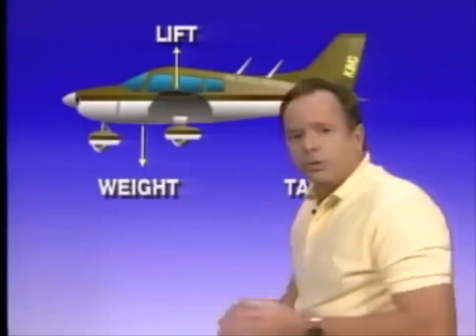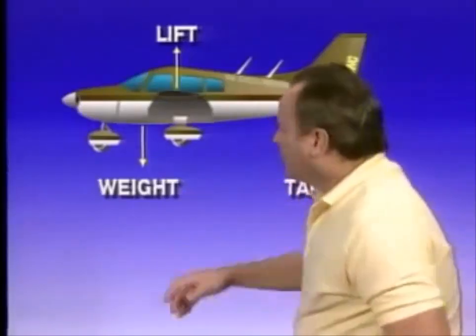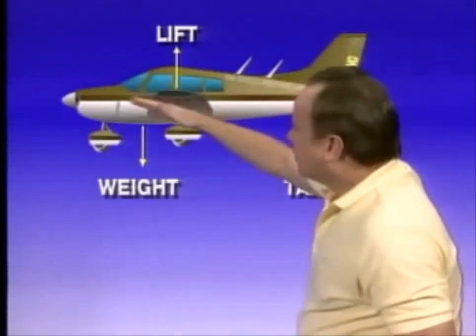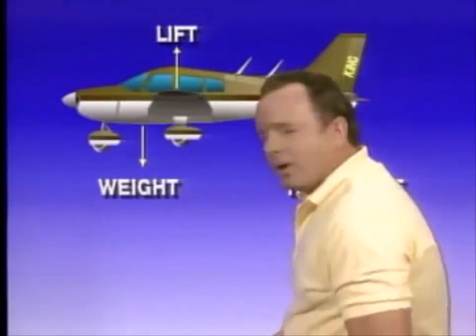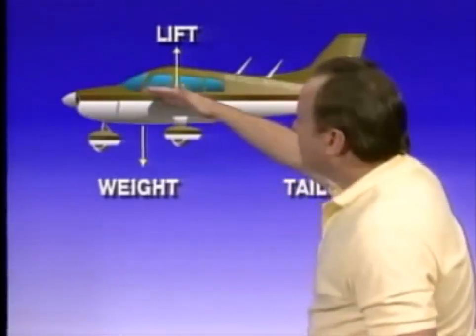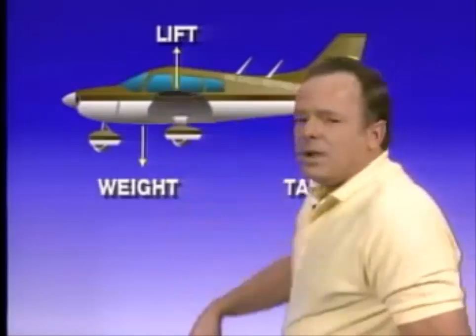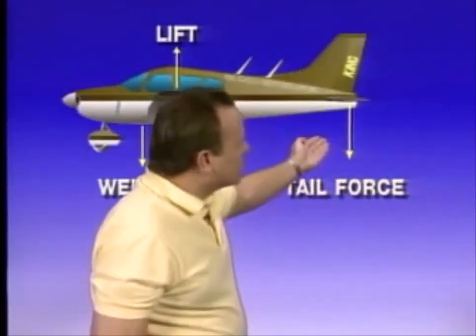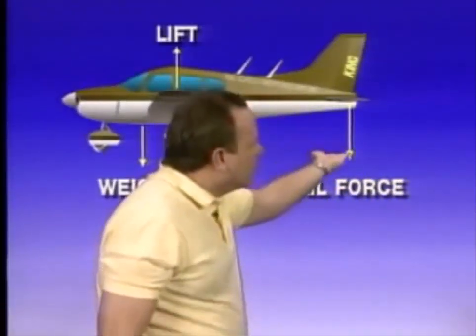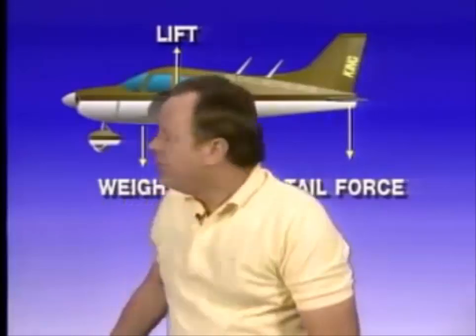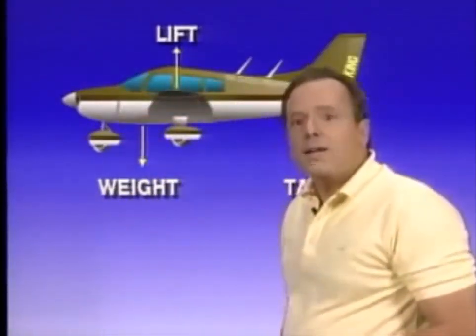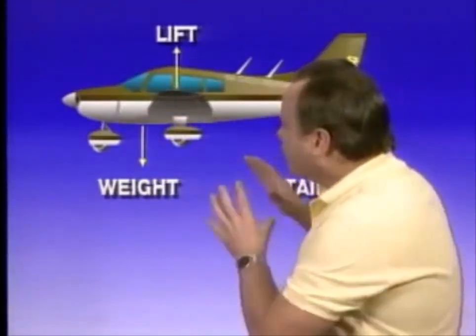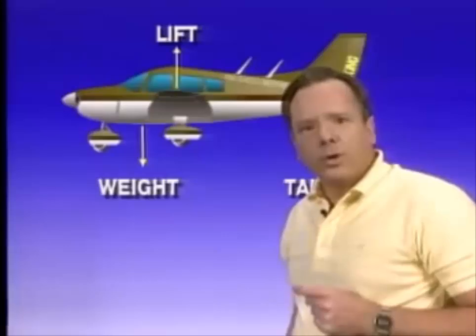Now let's get the airplane just a little bit too slow. For instance, the nose goes up, the airplane climbs, gets a little too slow because you got caught in a temporary wind current. As the airplane gets too slow, you have less down force on the tail. The tail will come up, the nose will come down, and the airplane will dive and return to its original speed.